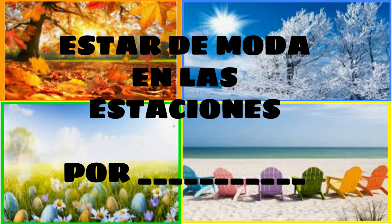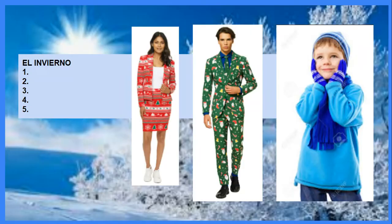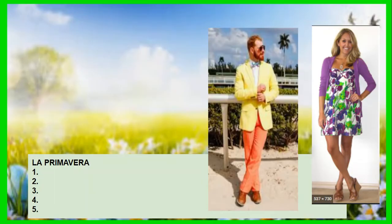You're supposed to write your name where it says 'por.' Right here you had to choose an outfit that we had already described in the instructions. I gave you an idea of a guy one and a girl one, with examples for winter and for spring. Remember on spring you had to have two of them, and they should be matching.